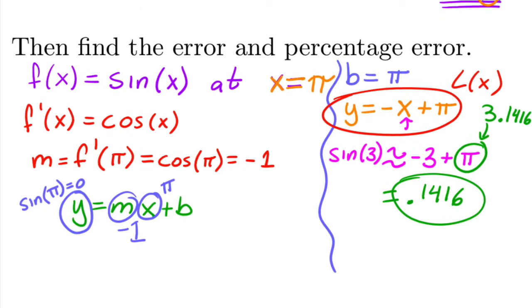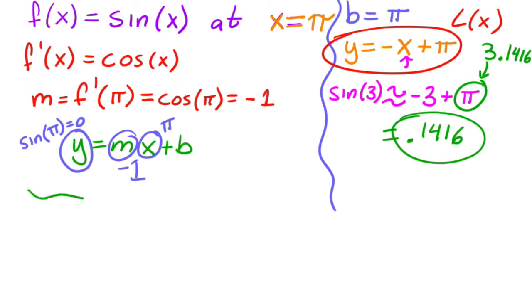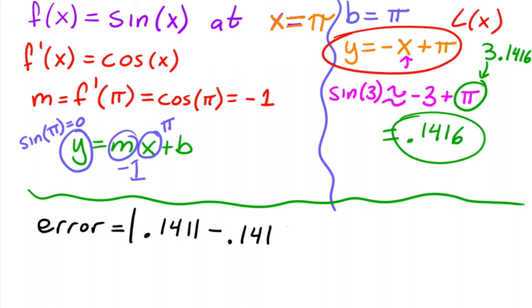So when we're looking for the error, the error is equal to the absolute value of the actual, which is 0.1411, minus the approximation, which is 0.1416. Well, this is just equal to 0.0005.